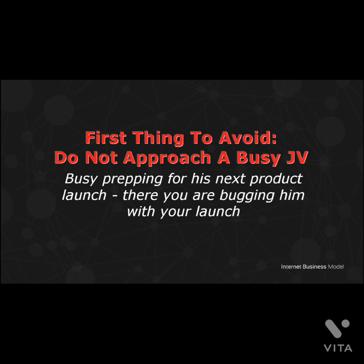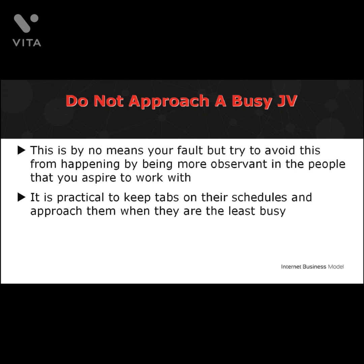Now that you've seen its potential, there are five top things to avoid when striking a potential JV partner. The first is do not approach a potential JV partner when he is busy. You'd be surprised by how many product vendors annoy a busy JV affiliate with multiple direct messages. Try not to disturb a potential JV who is busy prepping for his next product launch, vacation, or anything that needs his utmost attention. Keep tabs on their schedule and approach them when they are least busy.